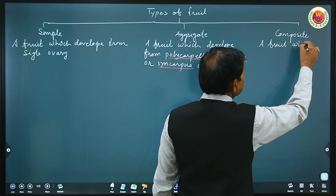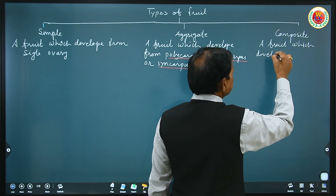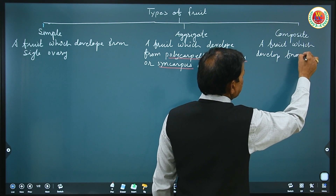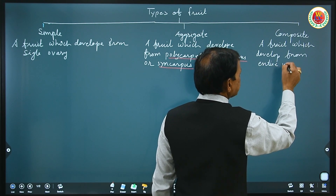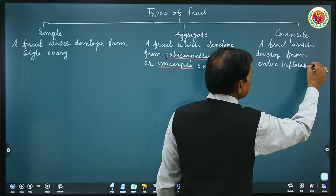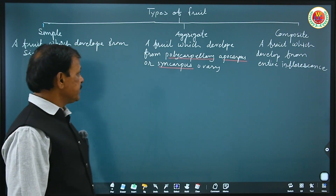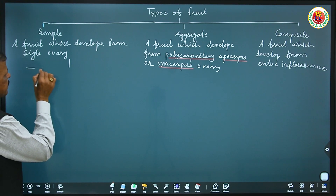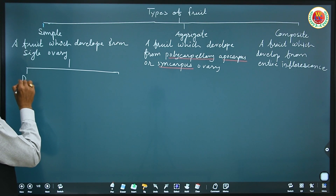The third type is composite fruit — a fruit which develops from an entire inflorescence, not a single flower. The entire inflorescence is known as a composite fruit. Simple fruit, which develops from a single ovary, is divided into simple dry and simple fleshy.